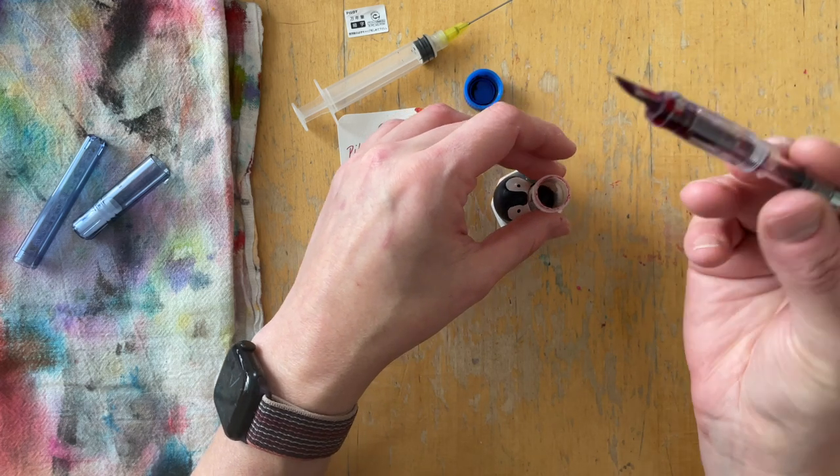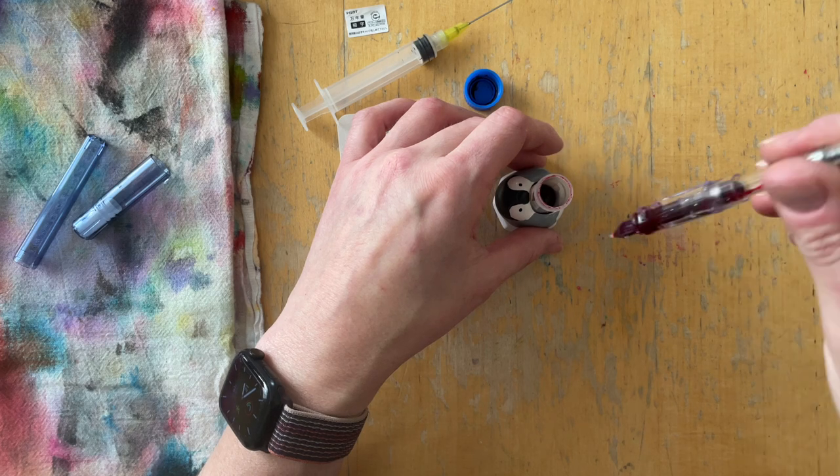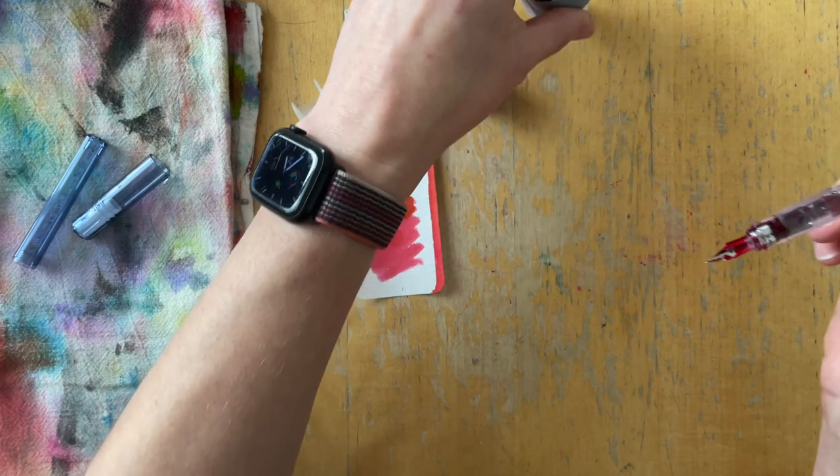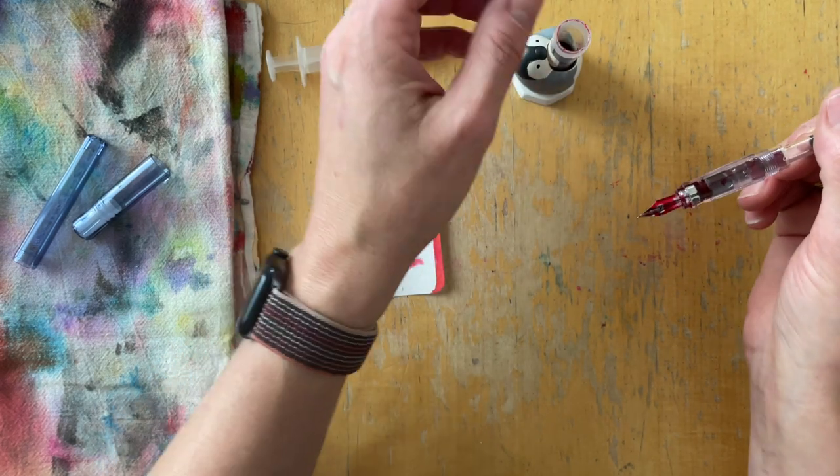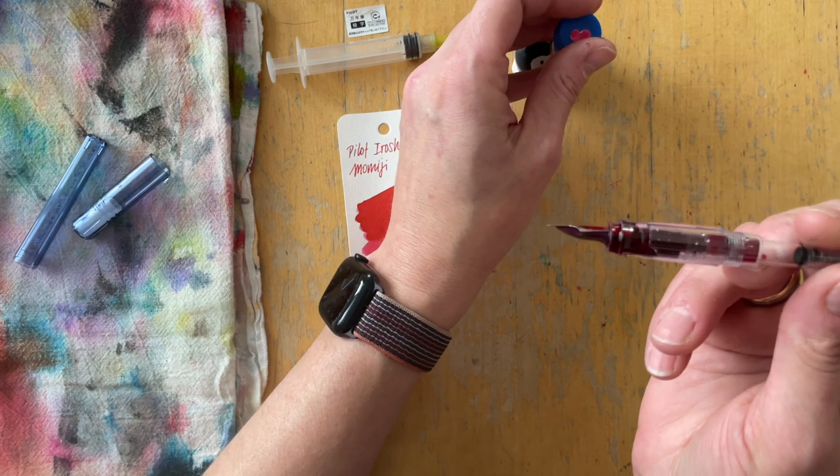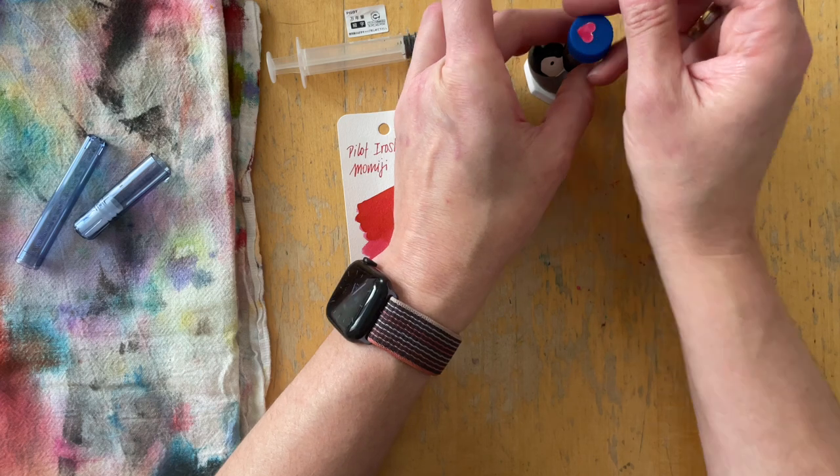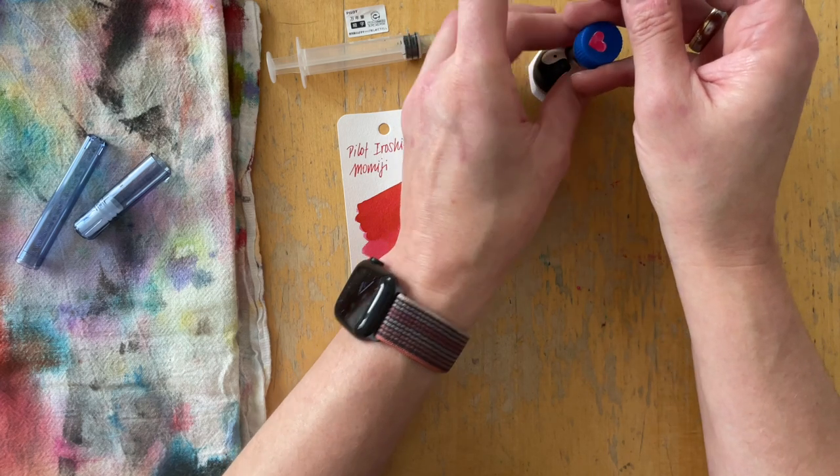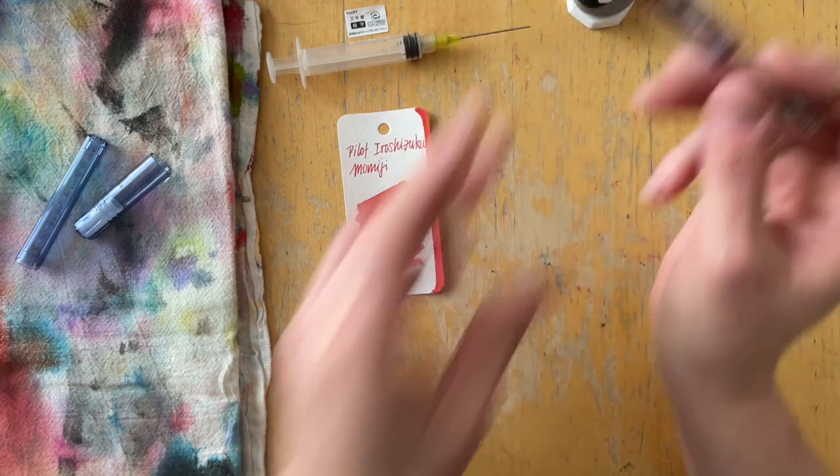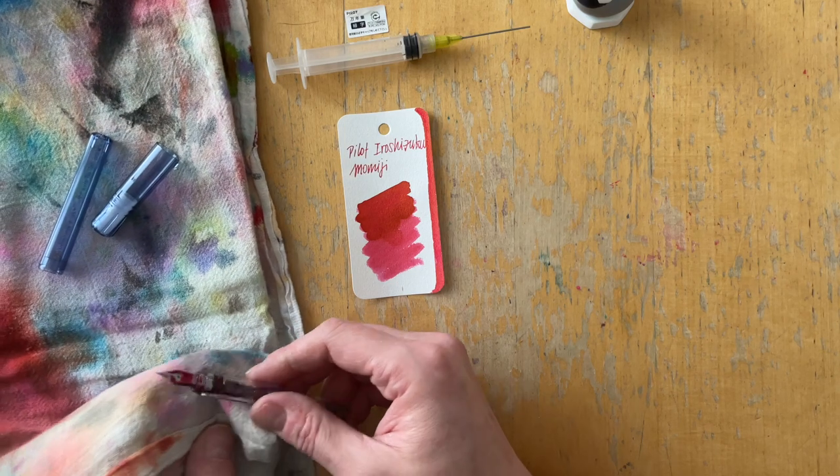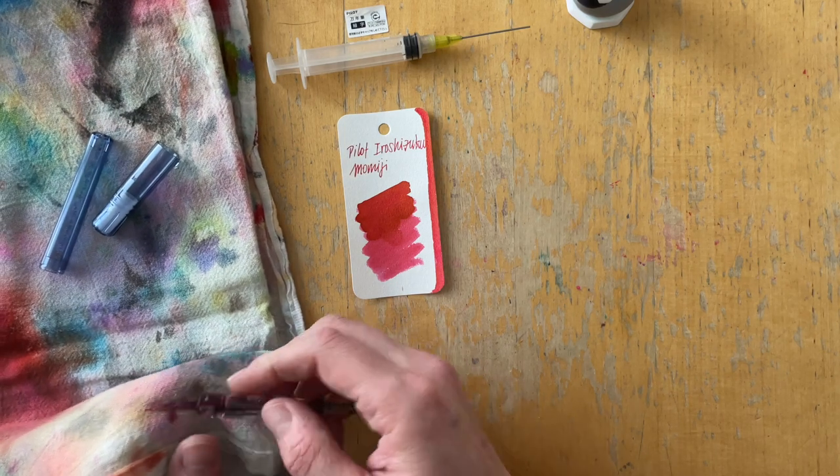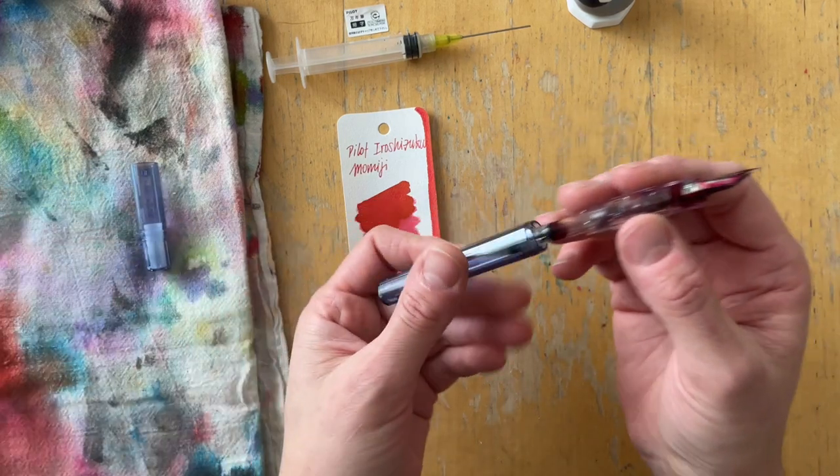I think for the beginning this is definitely enough because I filled it through the nib and feed, it should actually be able, I should actually be able to write with this right away. So I'm just going to wipe this off a little because that's a lot, and then let me screw this on and then put on the lid.